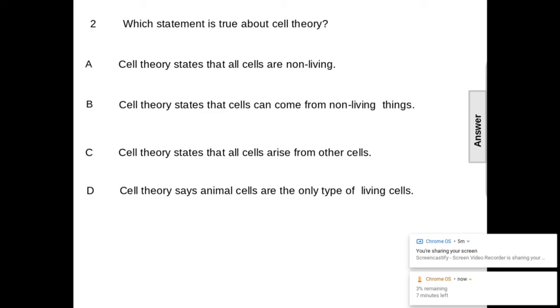Number two, which statement is true about the cell theory? Is it A, cell theory states that cells are non-living? B, the cell theory states that cells can come from non-living cells? C, the cell theory states that all cells arise from other cells? Or D, the cell theory states animal cells are the only type of living cells? Again, you might want to pause this to write the correct answer out, question and answer. The answer is C. The cell theory states that all cells arise from other cells.